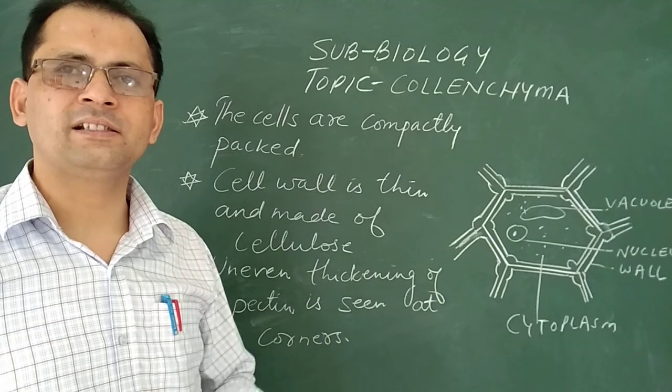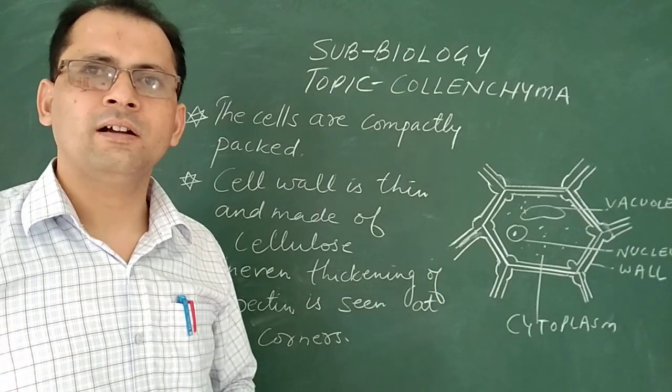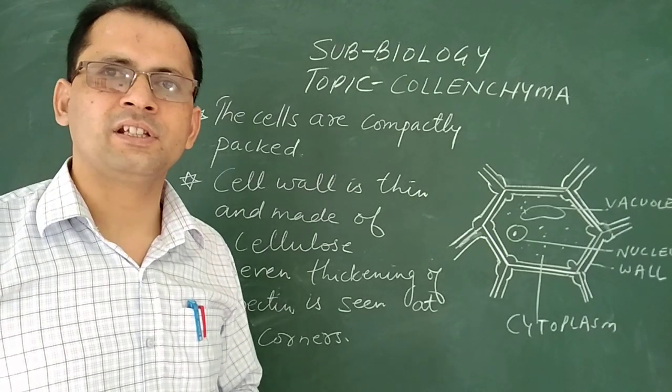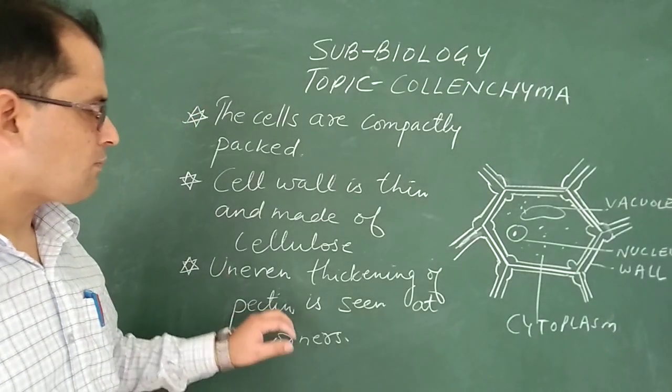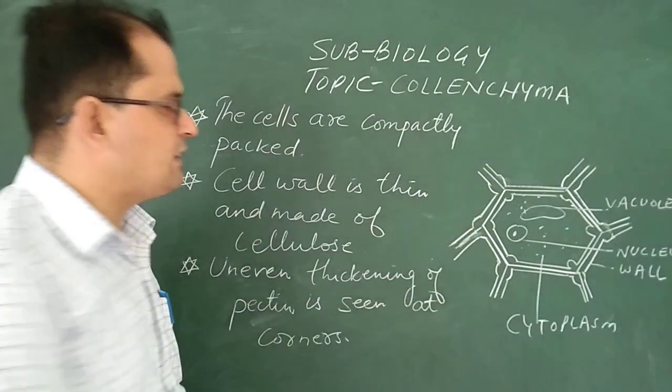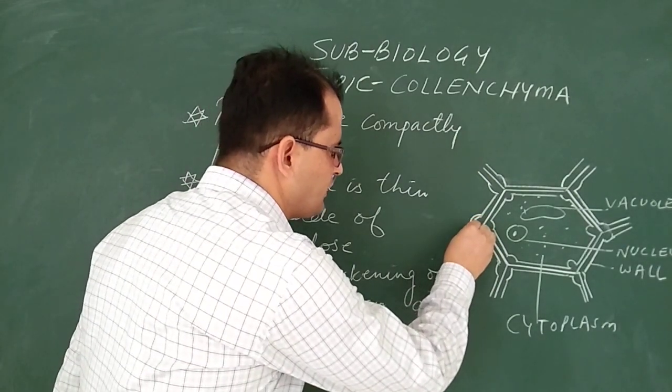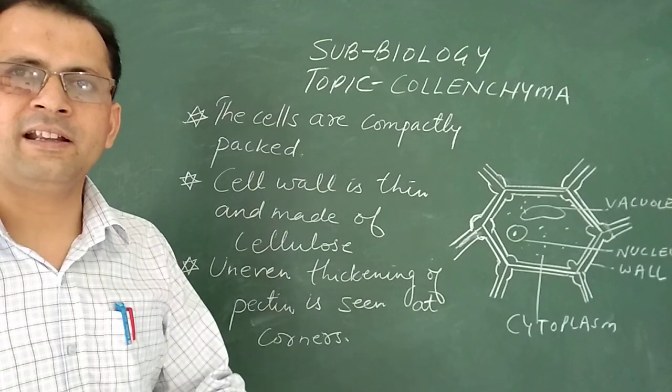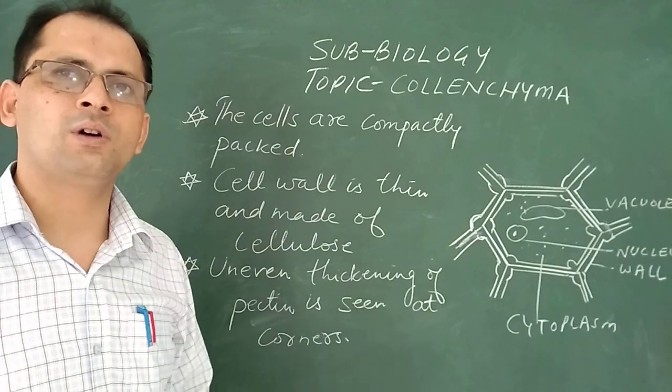And at some places there is uneven thickening of the wall due to presence of a chemical which is known as pectin. So at the corner you can see there is uneven growth due to presence of pectin. Pectin is like cellulose, it is also a chemical.